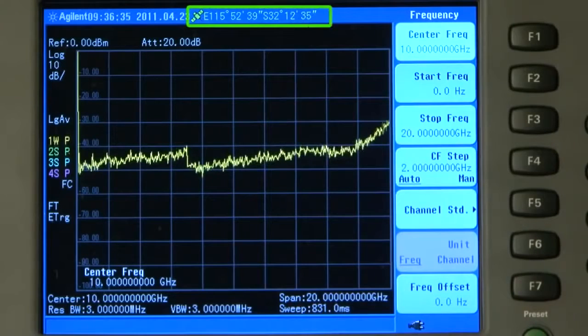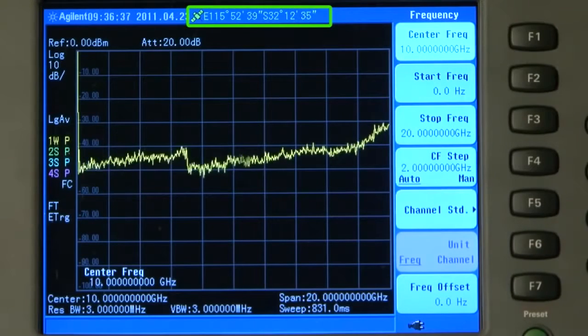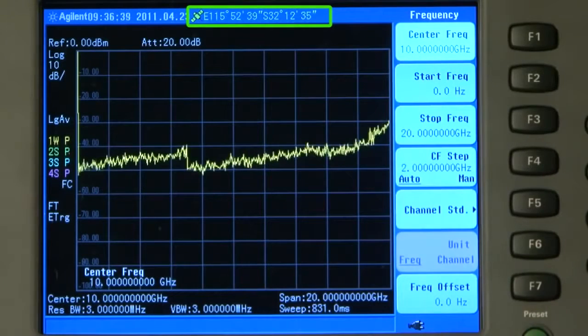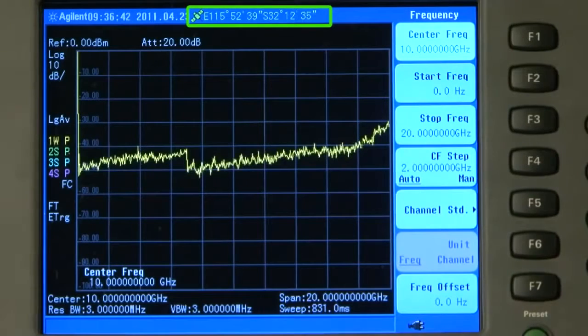You will also see I have turned on the built-in GPS receiver. Here you can see our current position, expressed as lat and long, and this can be saved with every measurement we make.